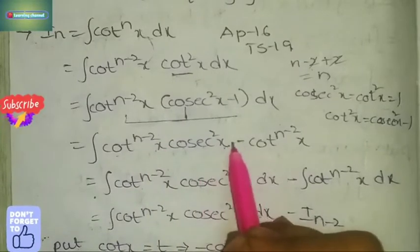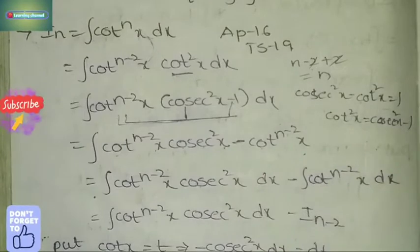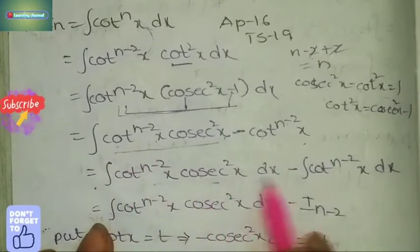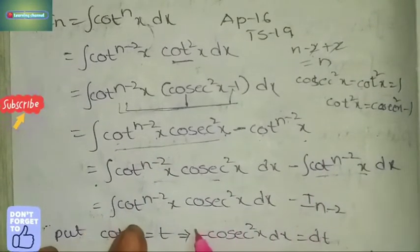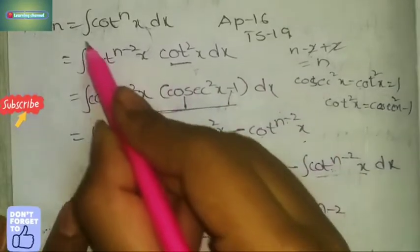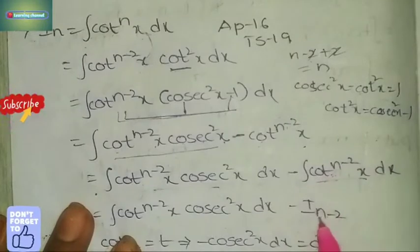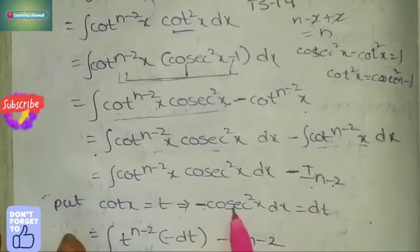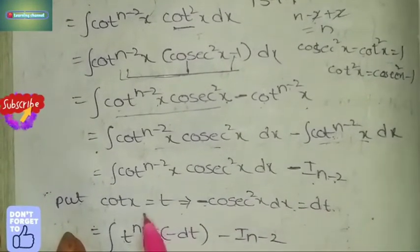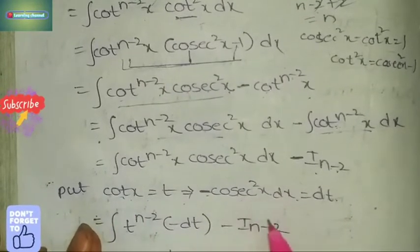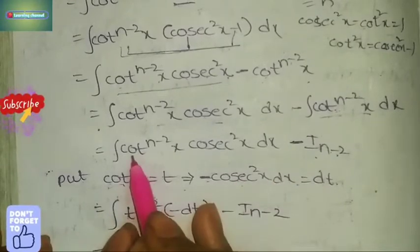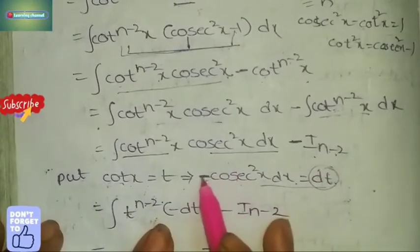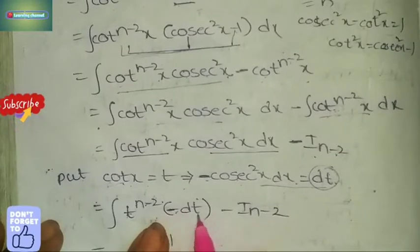Separate the integration. The second integration gives I_(n-2) with n-2, so we write I_(n-2). Now let t = cot x. Differentiation of cot x is -cosec² x, so -cosec² x dx = dt, meaning cosec² x dx = -dt. Substituting: integral of t^(n-2) · (-dt) minus I_(n-2), so minus t^(n-2) dt minus I_(n-2).